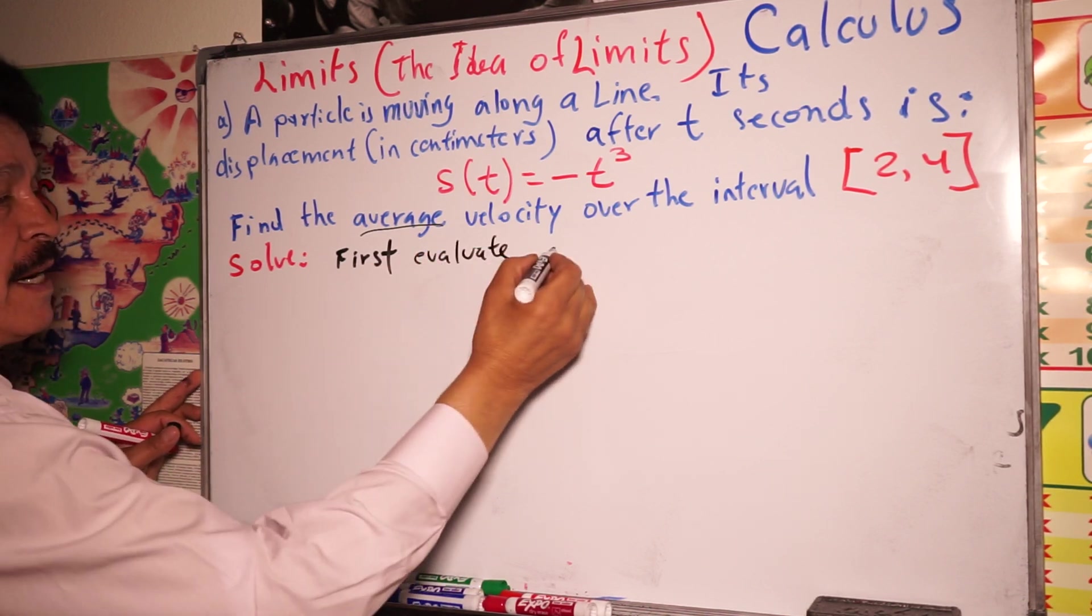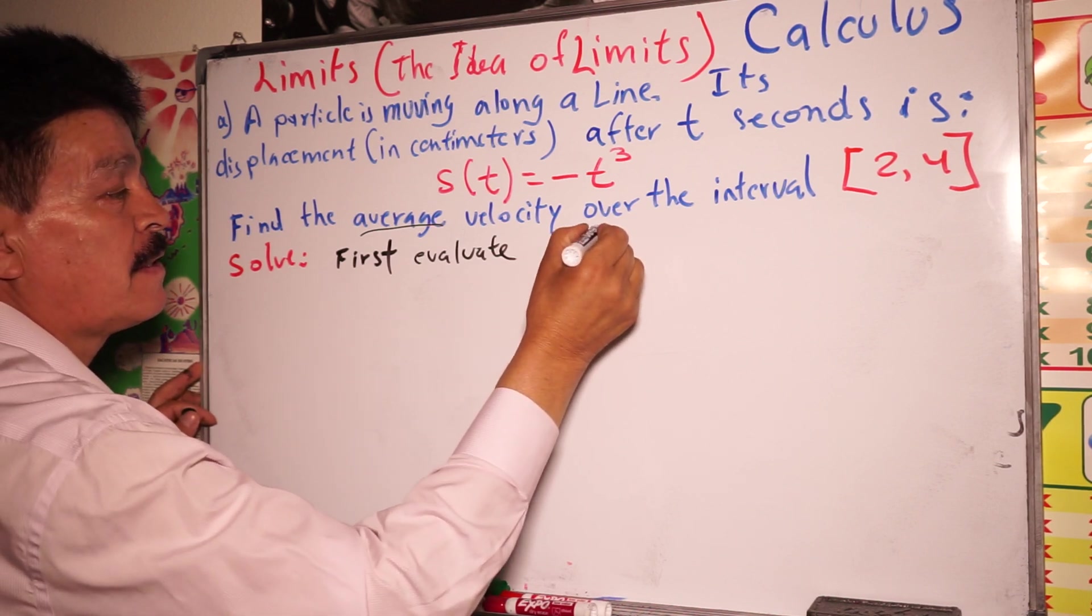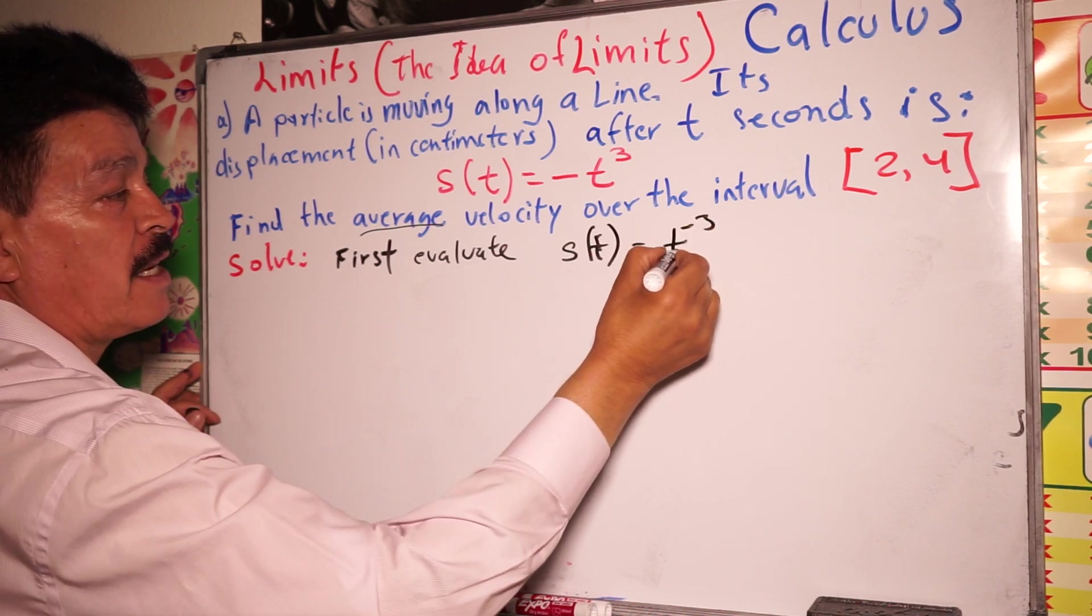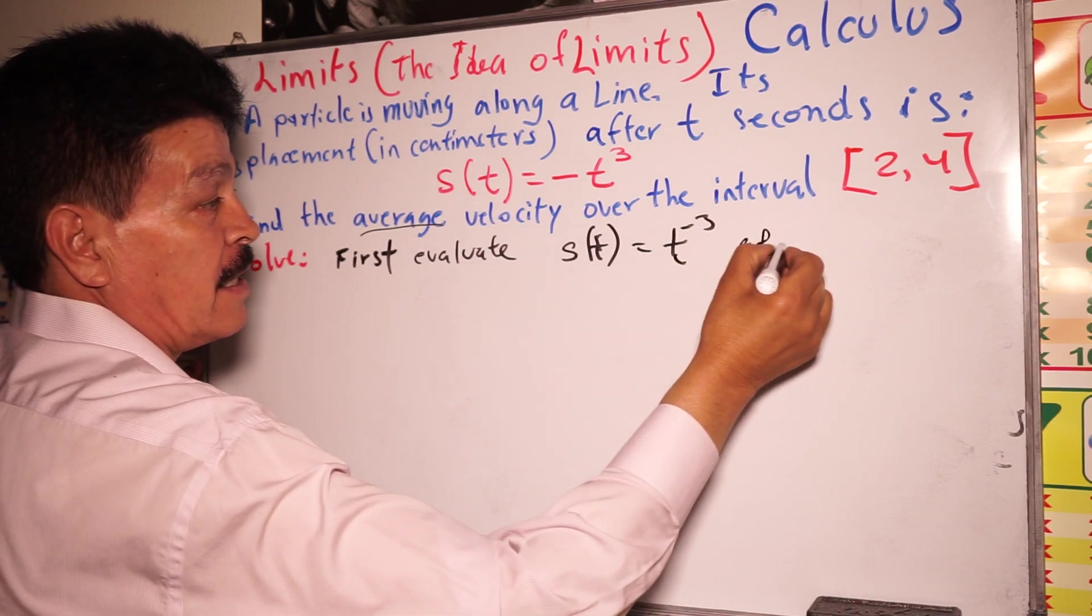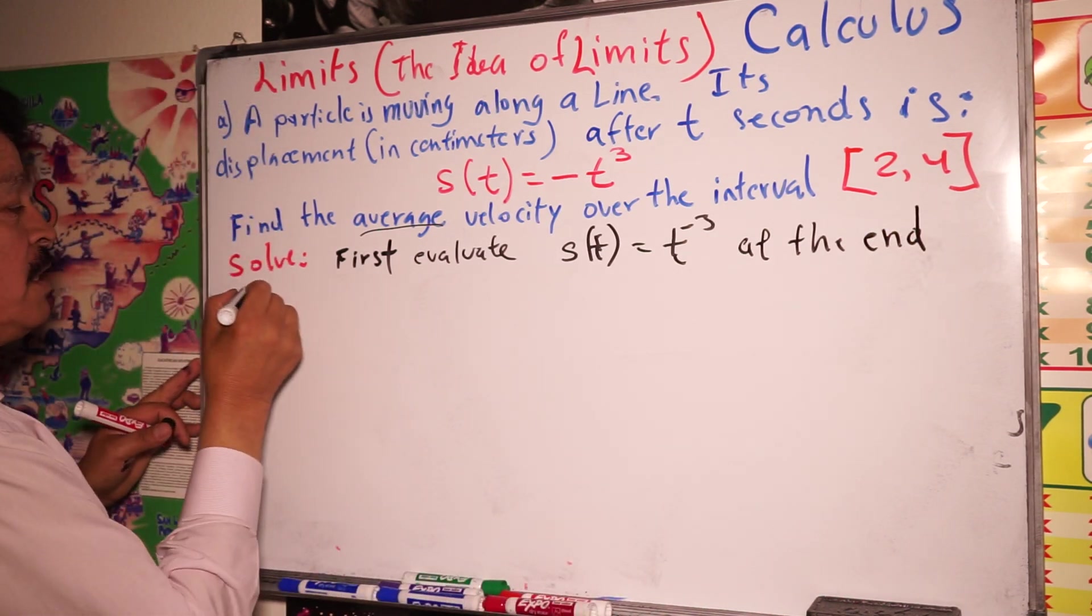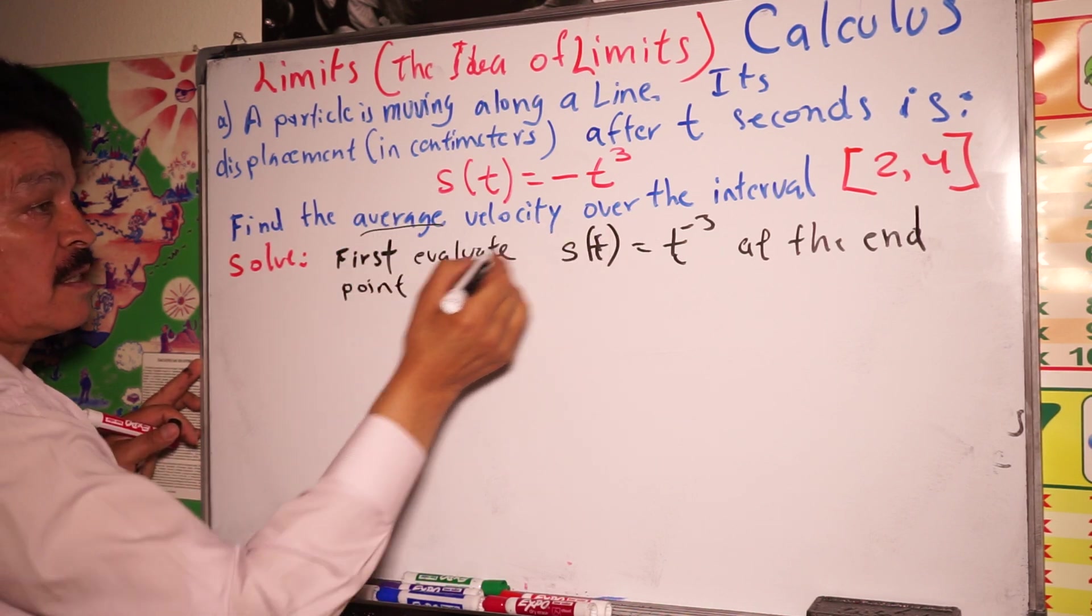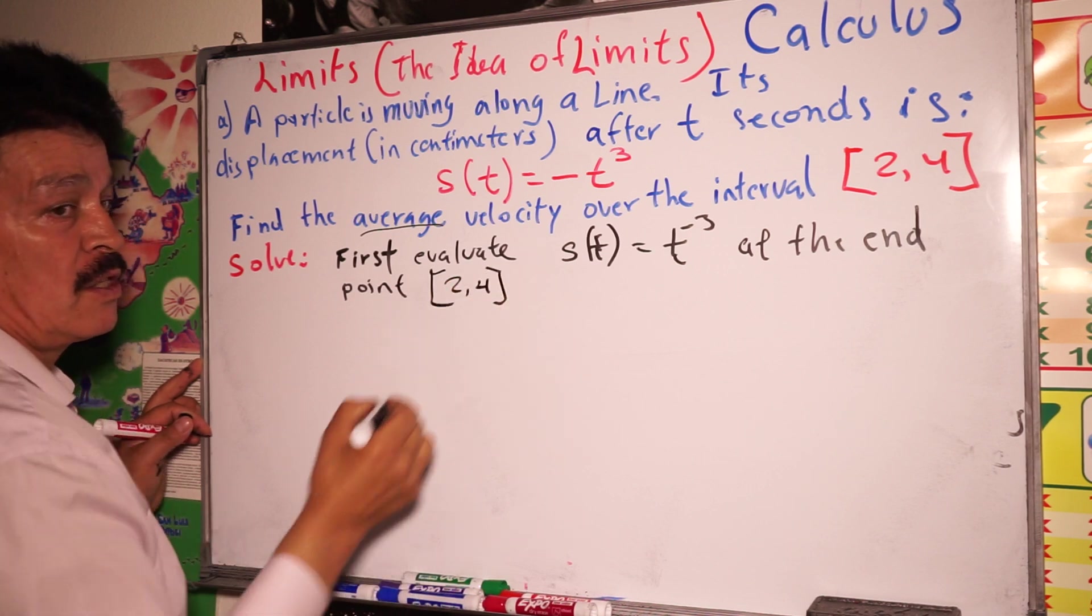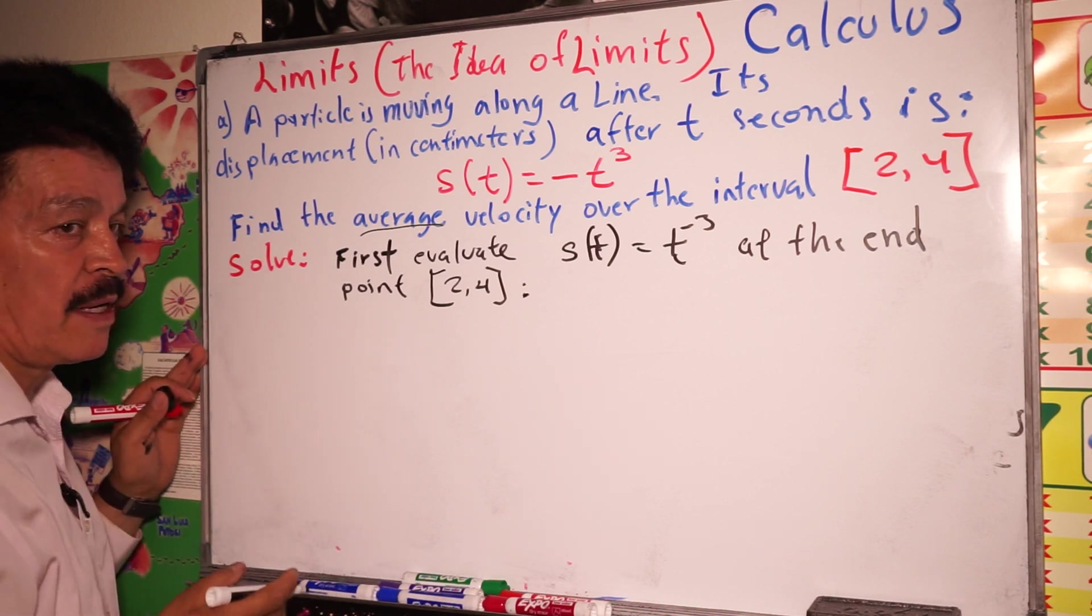We have to evaluate s(t) equals negative t cubed at the endpoints. What are the endpoints? This is our interval, two comma four. So this is the first step to find the answer in this problem.